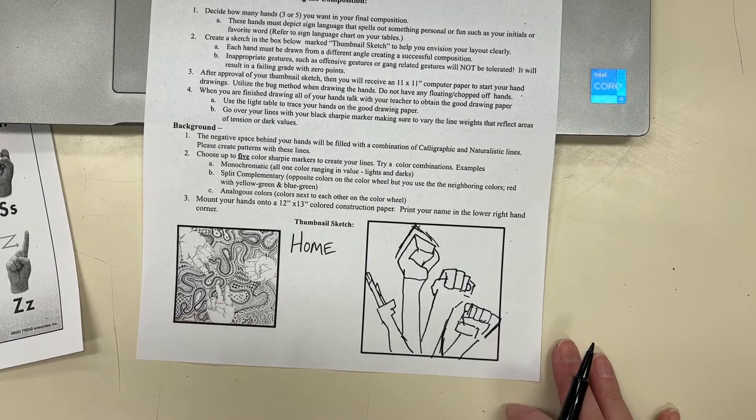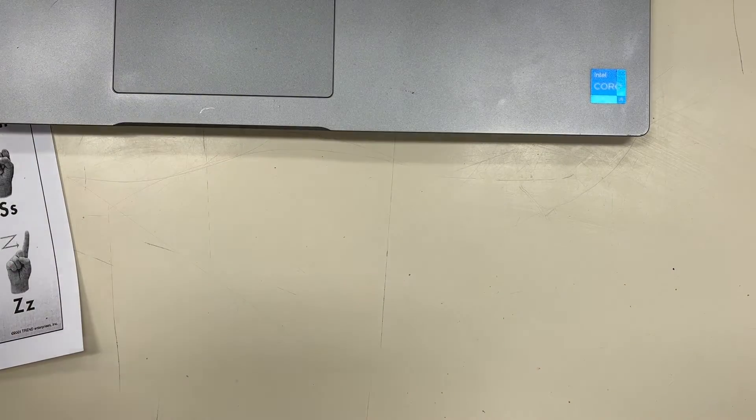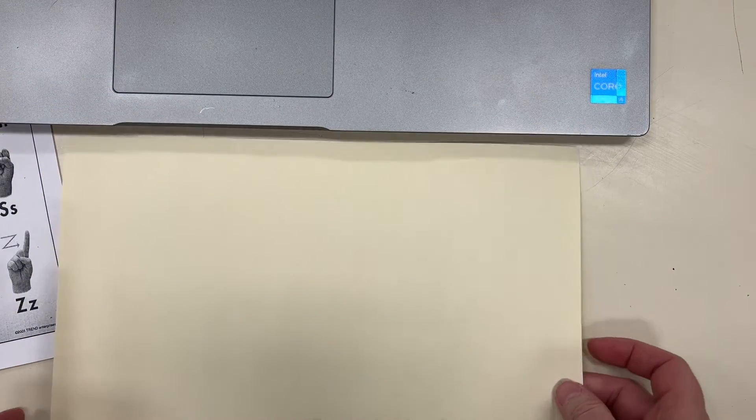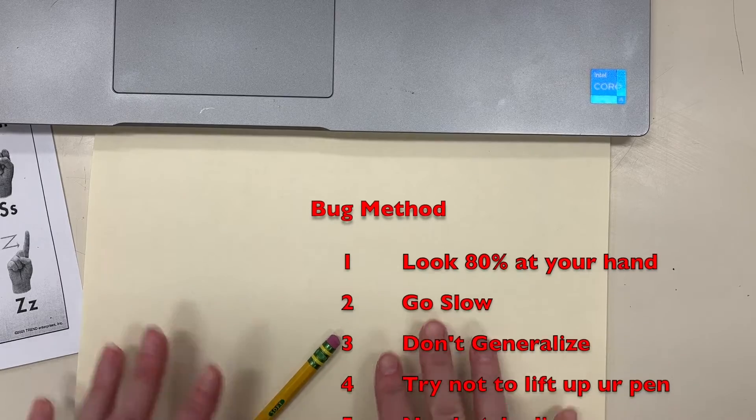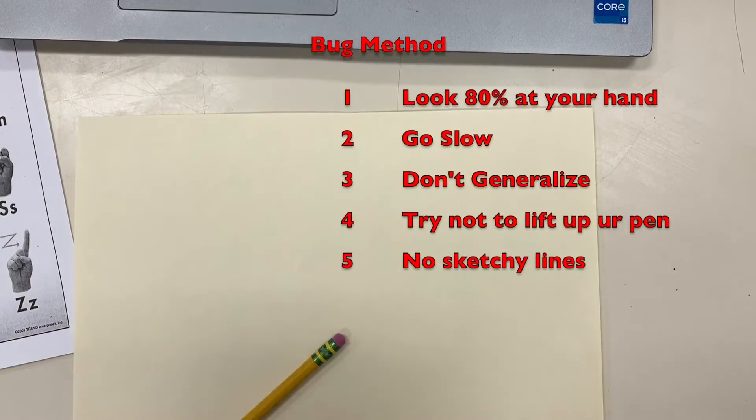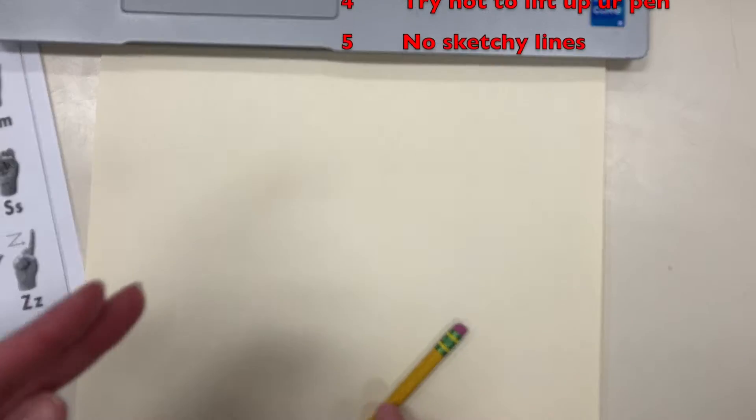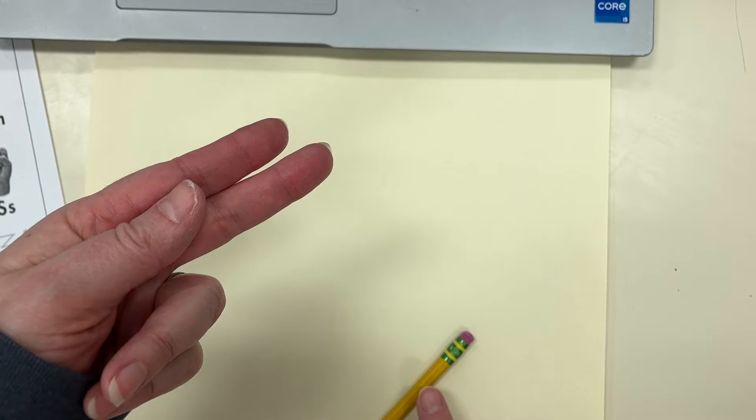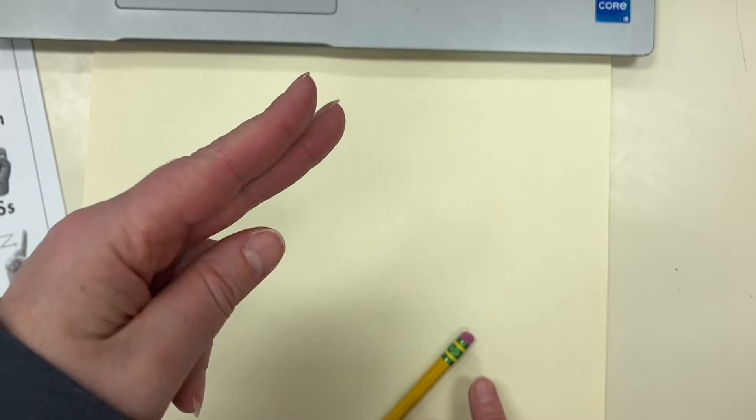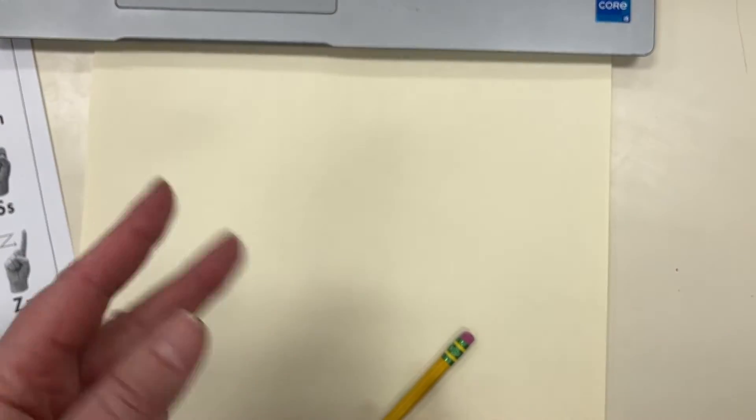Now you need to draw onto a piece of sketch paper first. This is thin computer paper. You're going to be using the bug method. We want to make sure that when you're doing it, you are actually looking at your hand. So an H is like this.